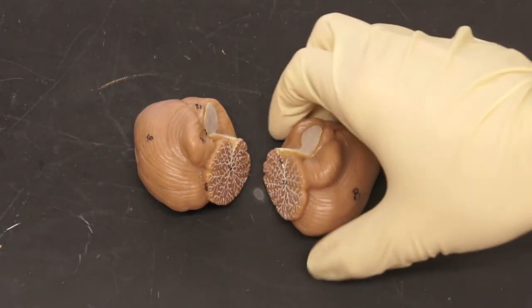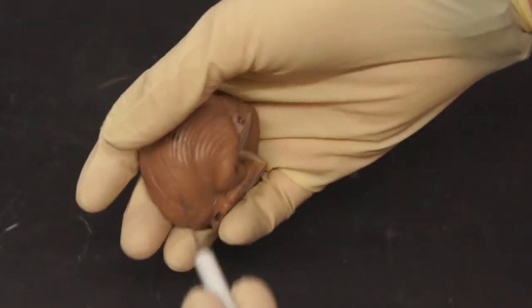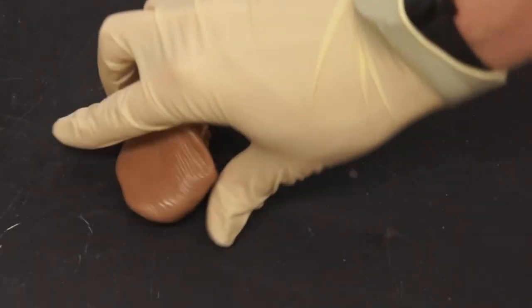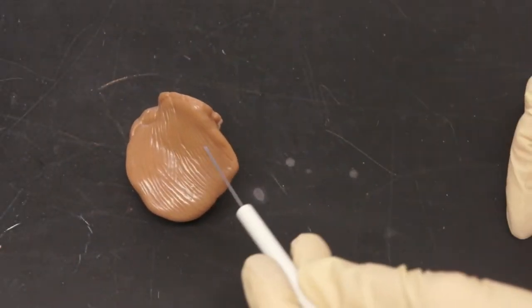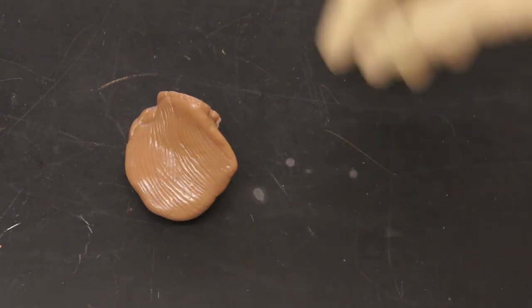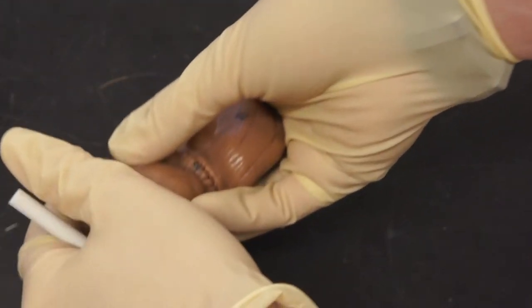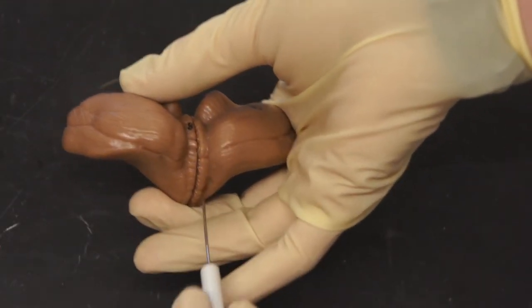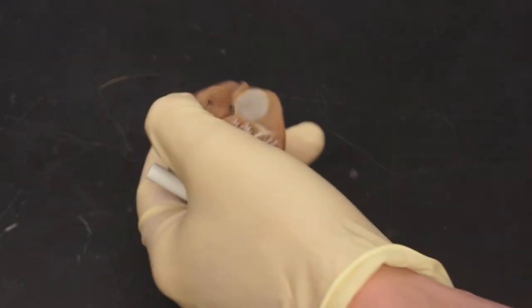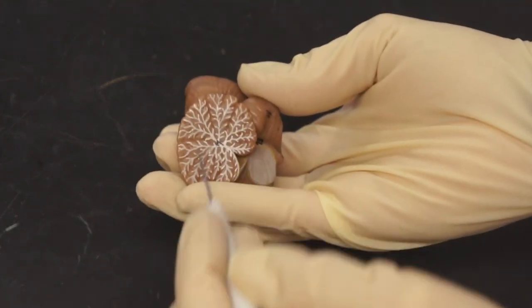Here we have a cerebellum. One half is a cerebellar hemisphere. The cerebellar cortex is this outside part of the cerebellum. Then we have folds in the cortex, and those are the folia. If we put both halves back together, we have a little line in the middle. This is the vermis. Now if we look on the inside, this white structure that's branching is the arbor vitae.